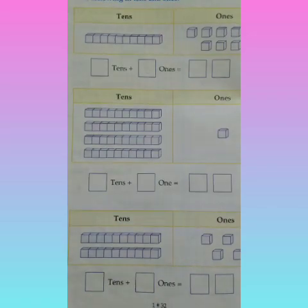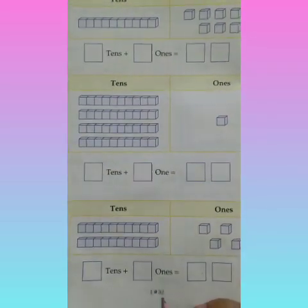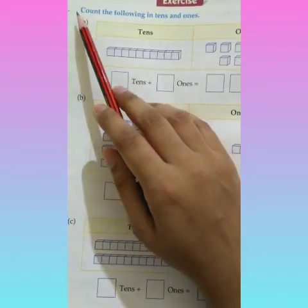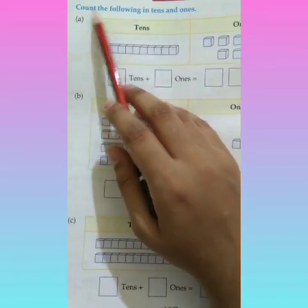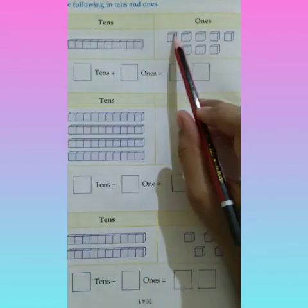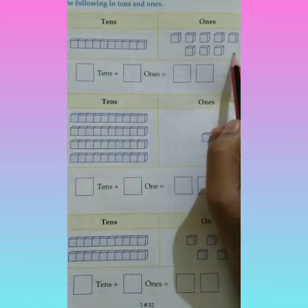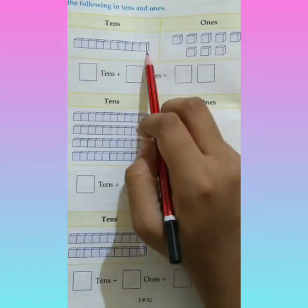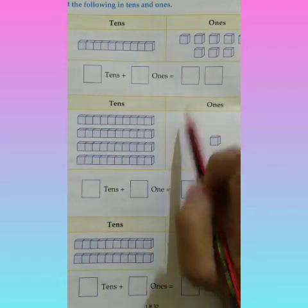So, we have to count the numbers on page number 32 in tens and ones. The first question that we have to solve, count the following in tens and ones. Single units are ones and when we write them together, 10 single units become 1 ten. 10 ones become 1 ten. So, how we are going to count them?